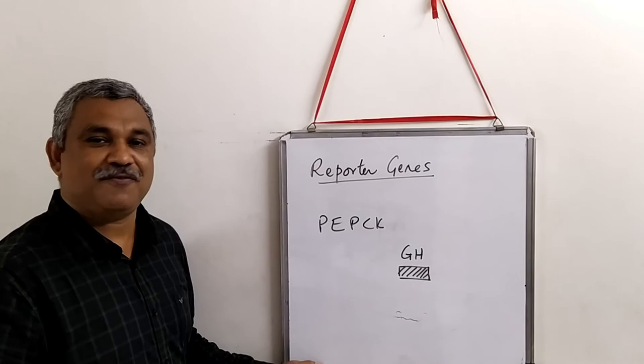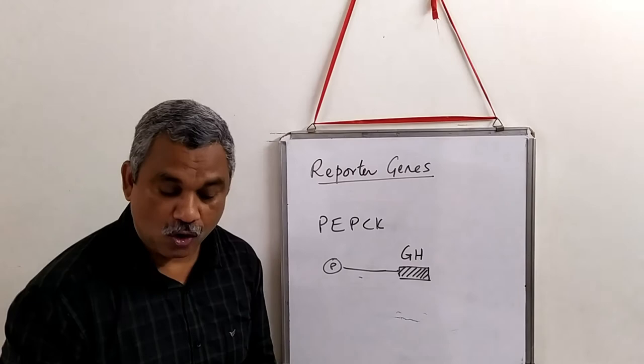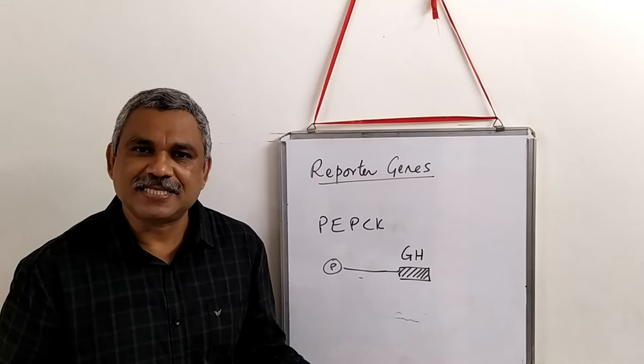The growth hormone gene has a promoter. If the growth hormone is expressed, it will be released into blood. Take a blood sample and you will be able to determine the level of growth hormone. Now if the PEPCK gene is inserted here, whenever there is a stimulation for growth hormone production, you will also produce PEPCK because it is under the influence of the same promoter.